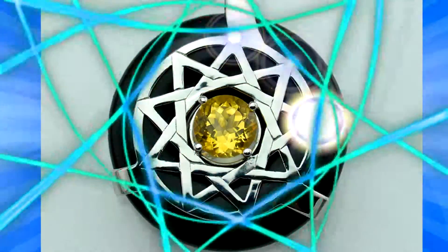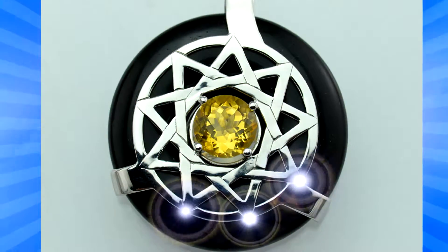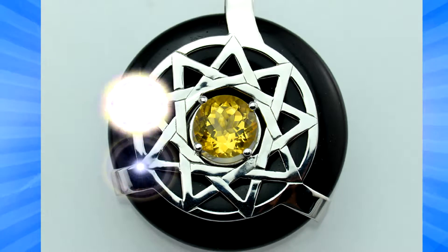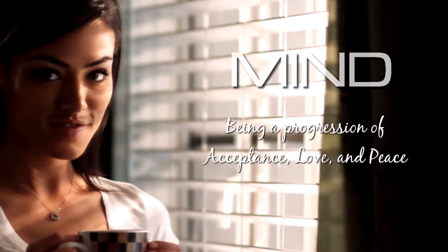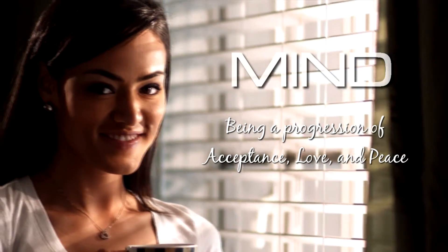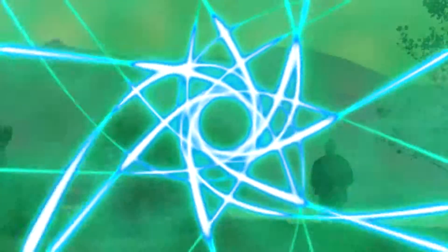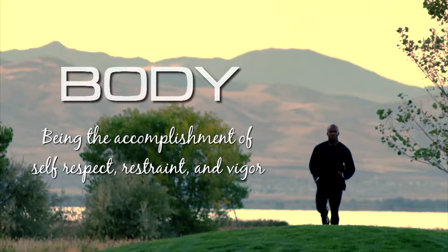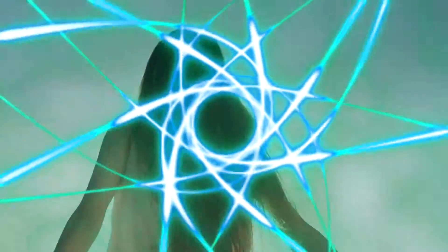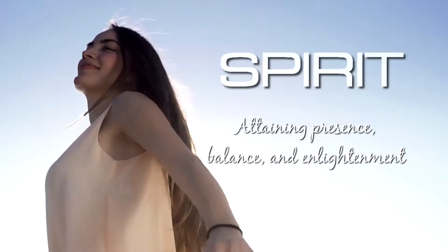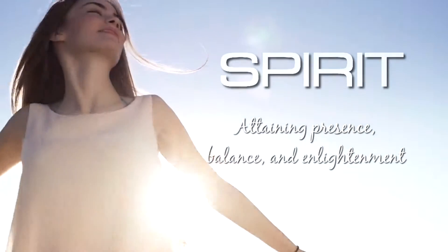Each point represents three ideals of the Trinity, with each concept progressing to the next as one travels along their spiritual journey. Our favorite interpretation was that of mind, being a progression of acceptance, love and peace. Body, being the accomplishment of self-respect, restraint and vigor. And spirit, attaining presence, balance and enlightenment.